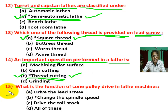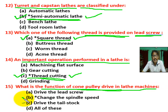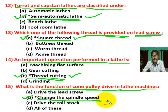Question number 15: what is the function of the cone pulley drive in a lathe machine? There are four options. Correct answer is B — the cone pulley drive in a lathe machine changes the lathe spindle speed.